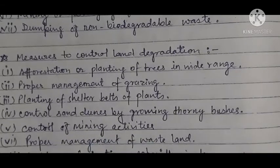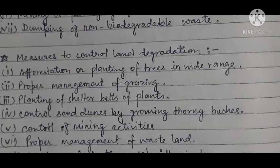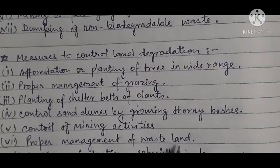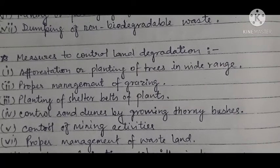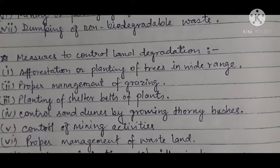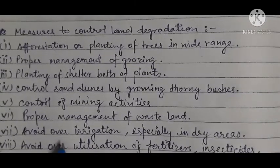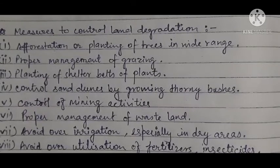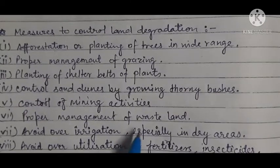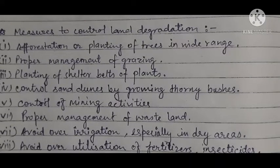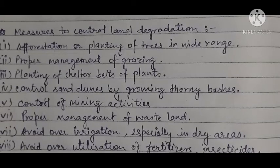Control of mining activities — due to mining activities causing degradation, here the measure is control of mining activities. Proper management of wasteland — first it is necessary to manage the wasteland. Can that wasteland become cultivable? If it can be cultivable, then how — by doing proper irrigation, not improper. If we over-irrigate more than necessary, then the wasteland will become even more wasted. Avoid over irrigation, especially in dry areas. In dry areas, over irrigation is done — the area which can be made cultivable by providing irrigation or manure — if we over-irrigate, that land area will be wasted.